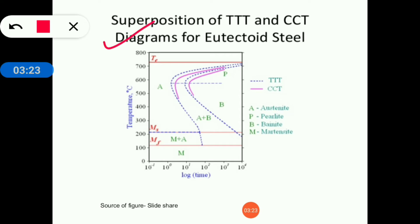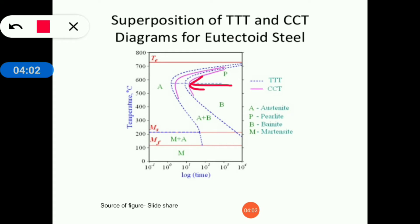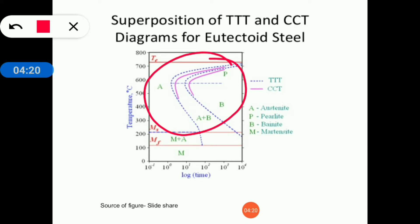The dotted line represents the TTT diagram and the solid line represents the CCT diagram. The CCT diagram starts later than the TTT diagram because continuous cooling transformation takes more time than isothermal transformation. The CCT diagram also finishes later — it takes more time both at the start and at the end of transformation.